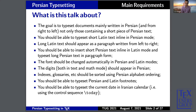We want to be able to typeset footnotes. The Persian footnote should appear right to left and the Latin footnote left to right, and we also need automatic footnote rules — so if the first footnote on a page is Persian, the footnote rule should appear right to left, and if it's Latin, left to right. We should also be able to typeset the current date in the Iranian calendar, so if you use the control sequence today, you get today's date in the Iranian calendar.